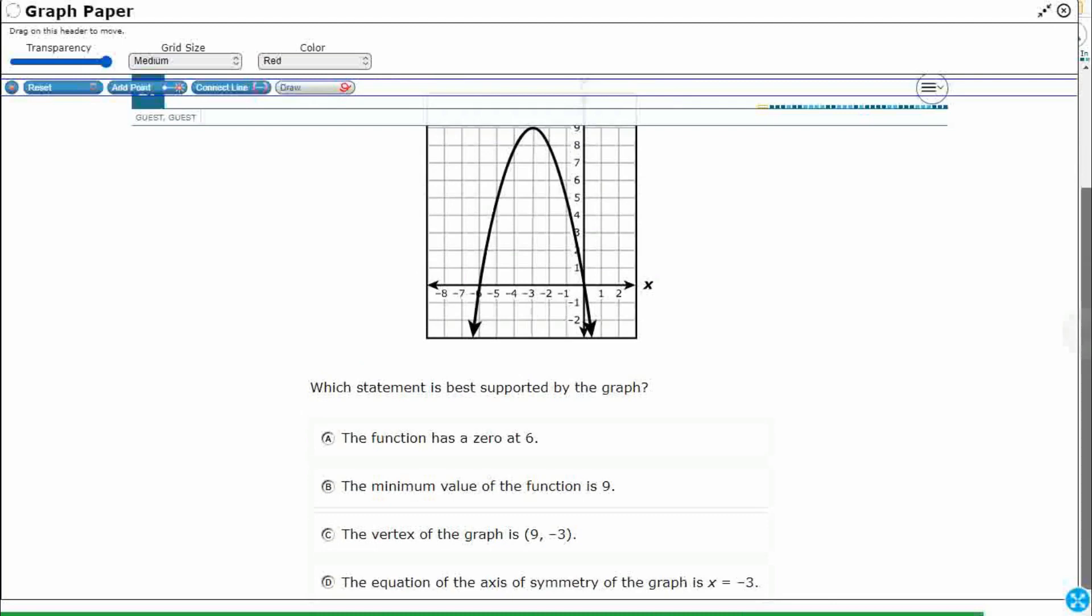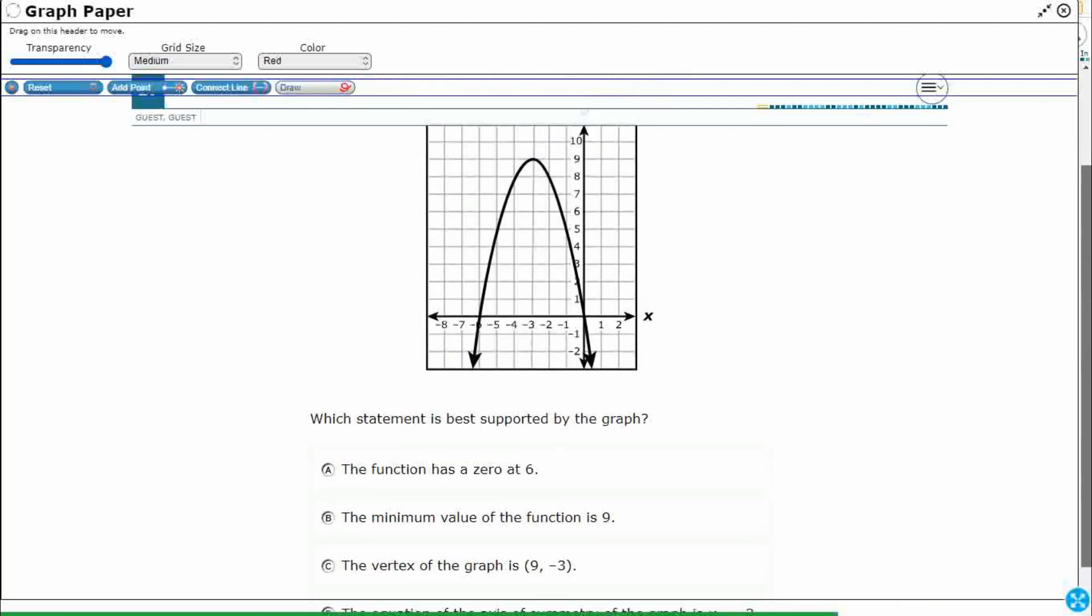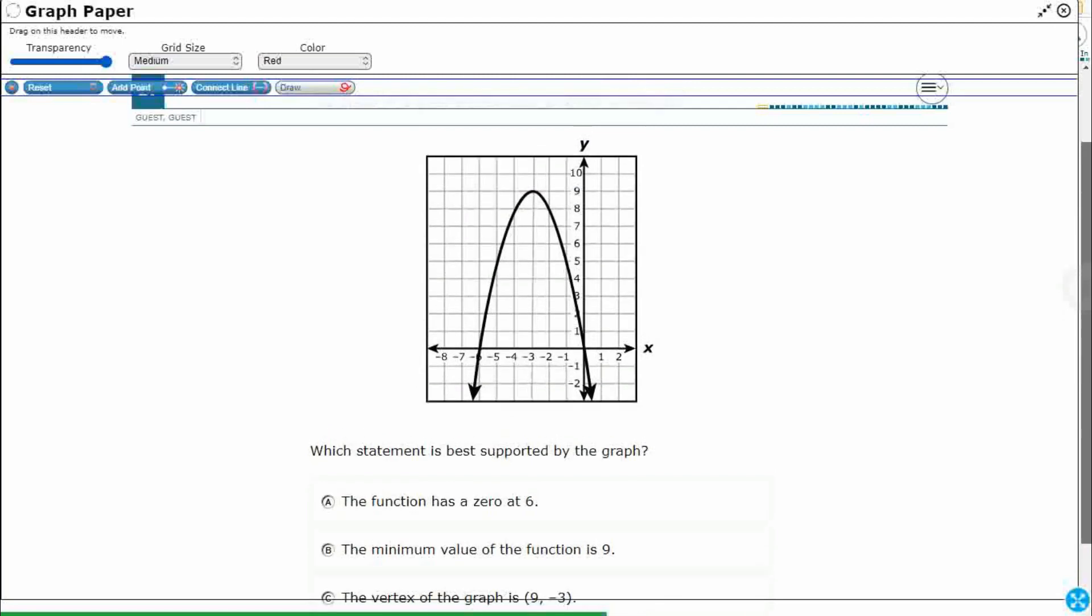The function A has a 0 at 6. Okay, so multiple problems with that. First, we need to know what this word 0 means. So 0 has multiple words that can also refer to what a 0 is. We can also call the 0 a solution. To me, the easiest one to keep in mind is a 0 is an x intercept. Alright, so all of those are the same thing. The 0, the solution, the x intercept.